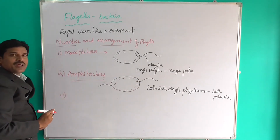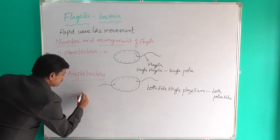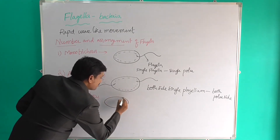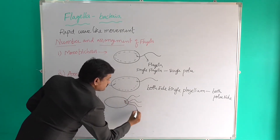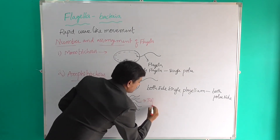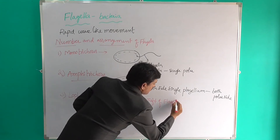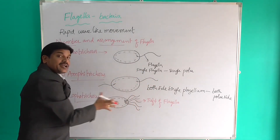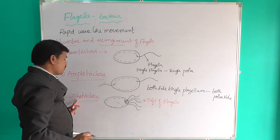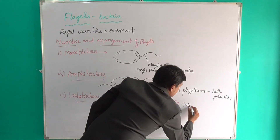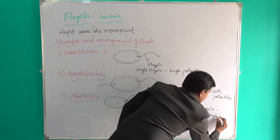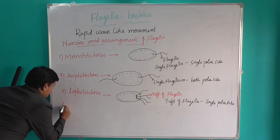The next third type is lophotrichous. What is meant by lophotrichous? See this diagram — more flagella, this is also called as a tuft of flagella. A tuft or group of flagella which are present in a single polar side is called as lophotrichous.